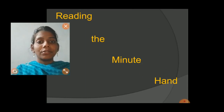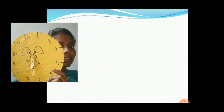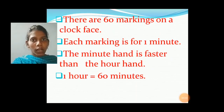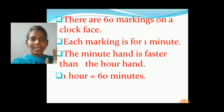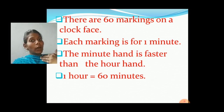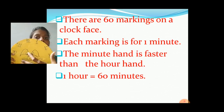First, see this clock. Remember this clock? This bigger markings are for hours and the smaller markings are for minutes, okay? Now you know how to read the time, correct? Time is read in hours and minutes. This is clear, correct?